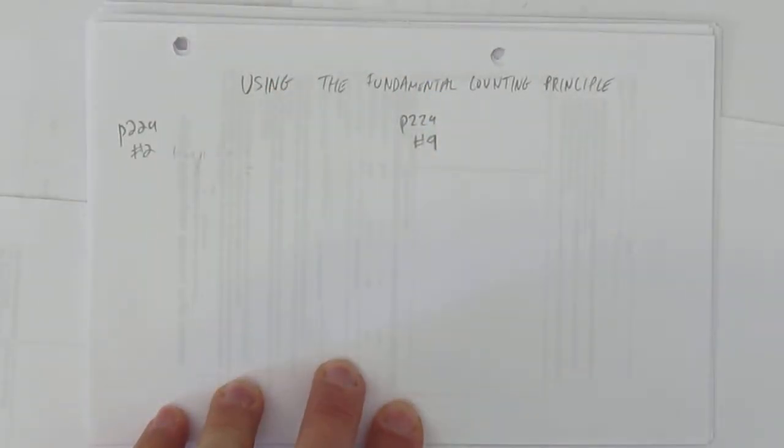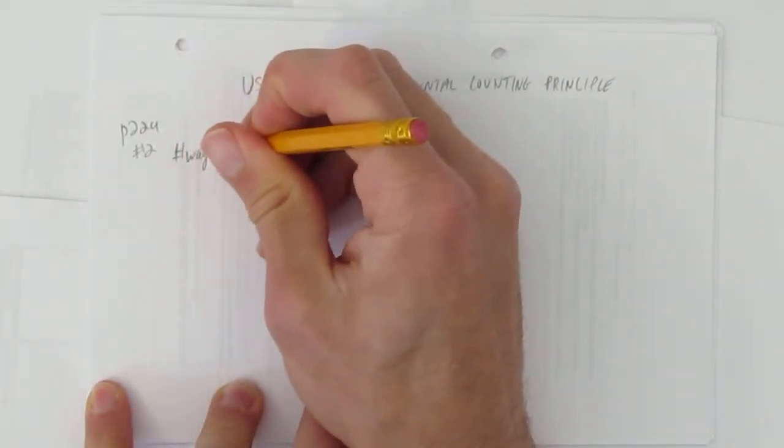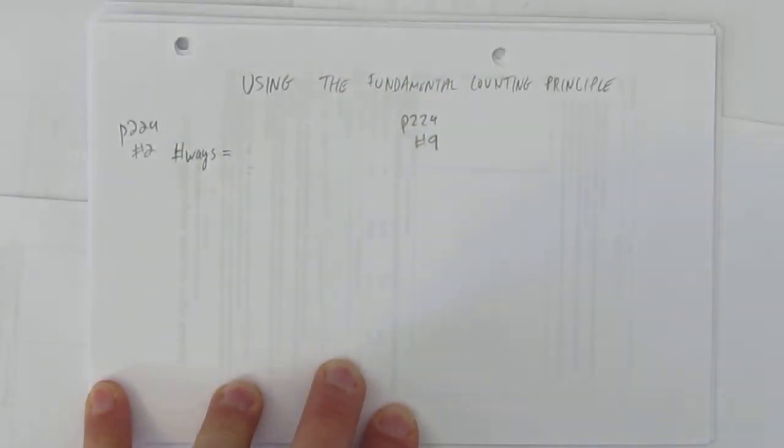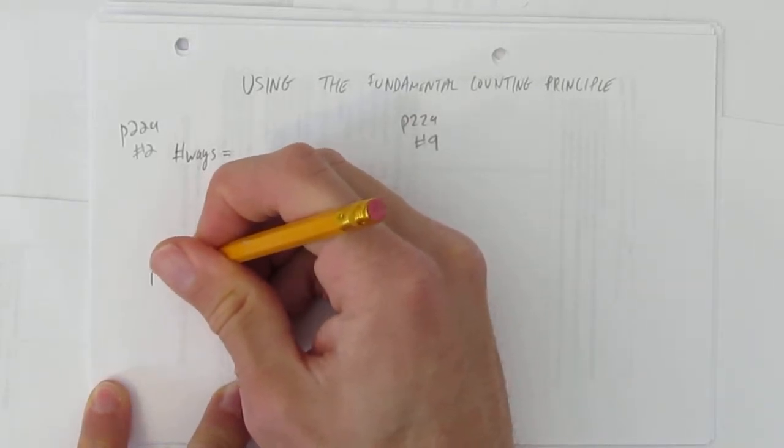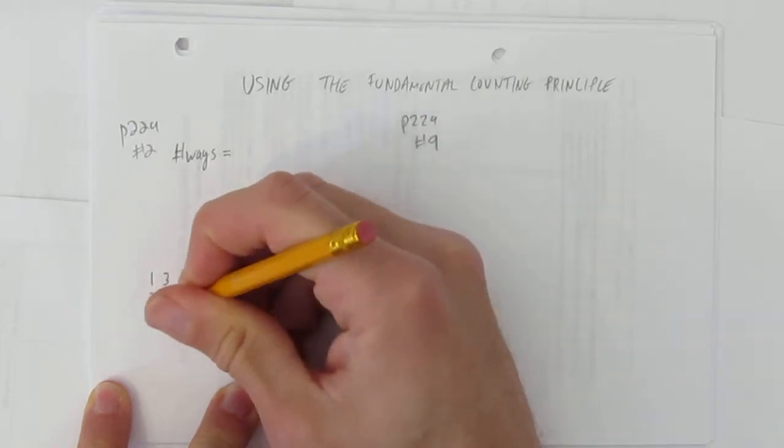In how many ways can you roll either a sum of 4 or a sum of 11 with a pair of dice? Well, the number of ways is going to be equal to, and let's think about how you can roll a sum of 4. If you're trying to roll 4 on two dice, you could roll a 1 and a 3, or you could roll a 2 and a 2, or you can roll a 3 and a 1.